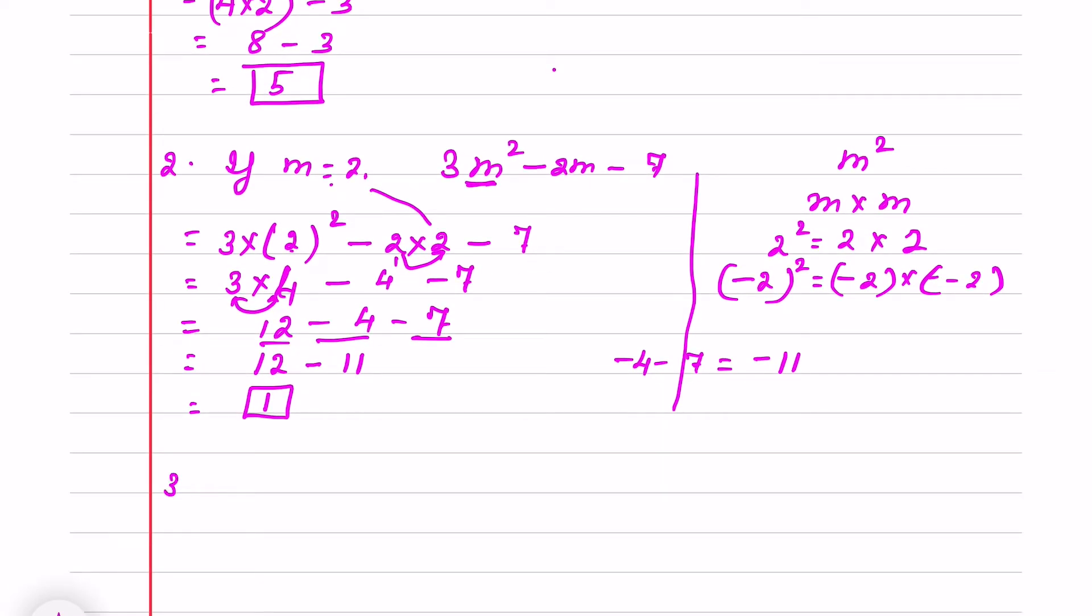Now suppose any negative value I take. Always you do mistake when we take negative value. Suppose if p is minus 2 and you have to find out minus 3p square plus 4p plus 7. Same way we will do. So we put the value minus 3p square. P square is minus 2 square plus 4p minus 2 plus 7.